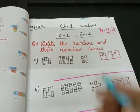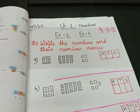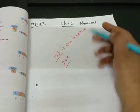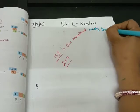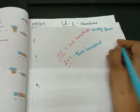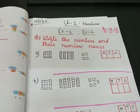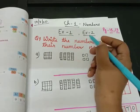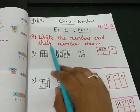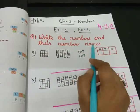In previous online classes we already learnt three-digit number names, like one hundred ninety-three, two hundred, and two hundred four. Today I will teach Exercise 1 and Exercise 2 together because both are the same. The question is: write the numbers and their number names.